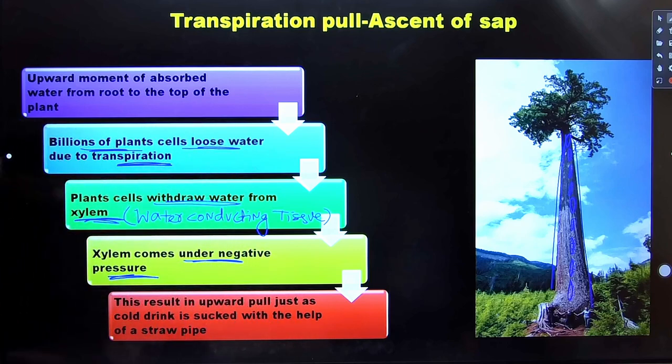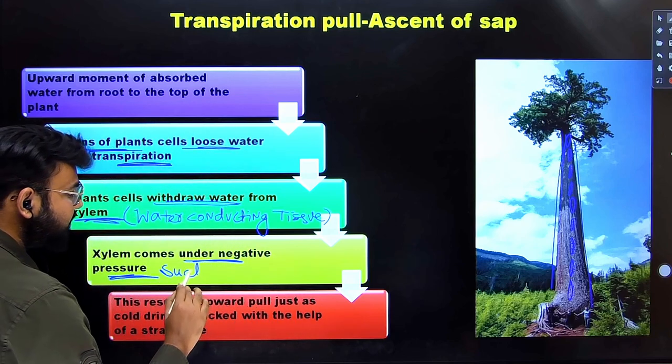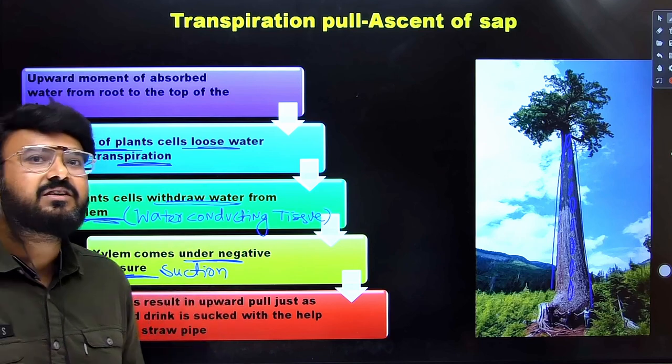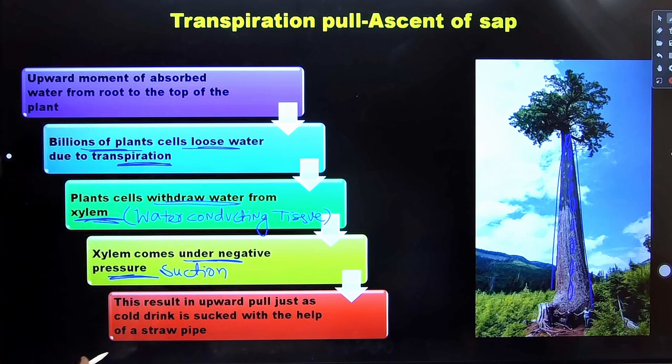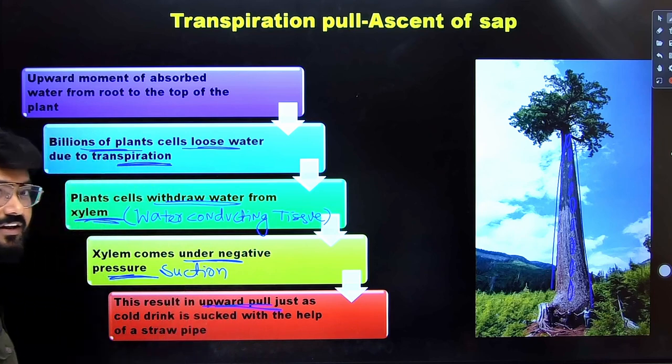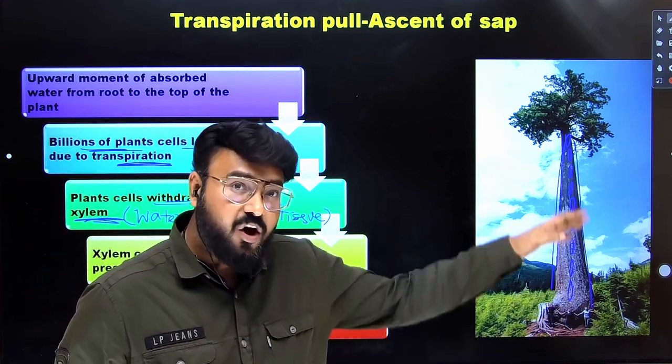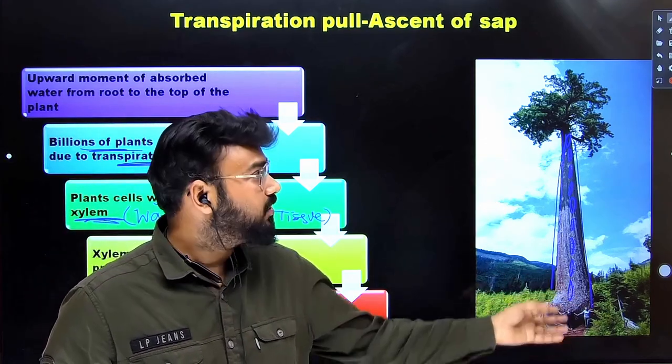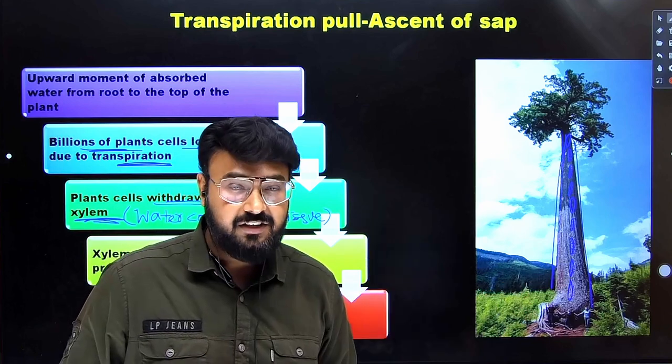Similarly, that suction is created when xylem comes under the tension or the negative pressure. And this results in upward pull. That is how the tall trees are able to send the water to the top to each and every part of their body.